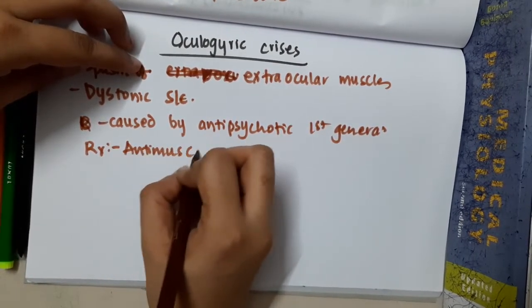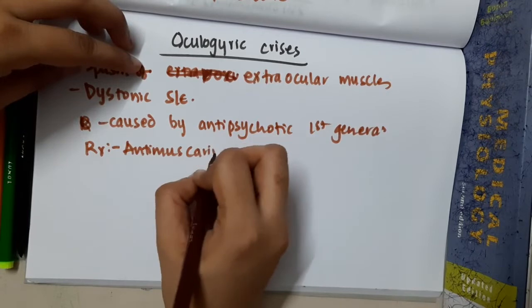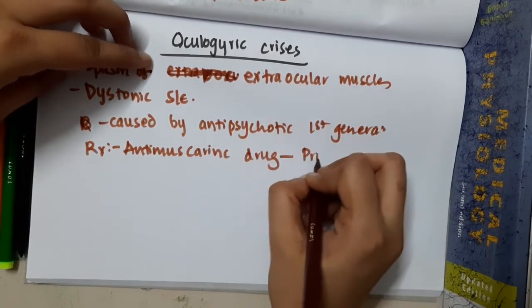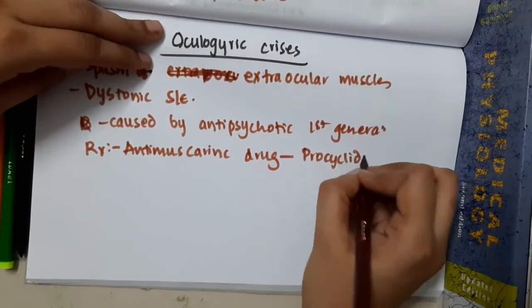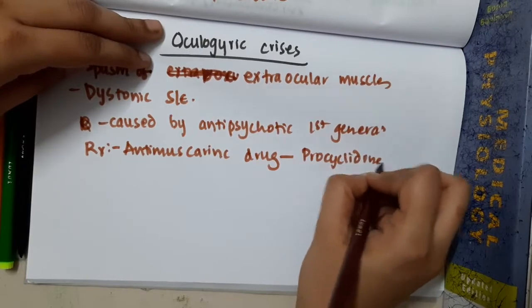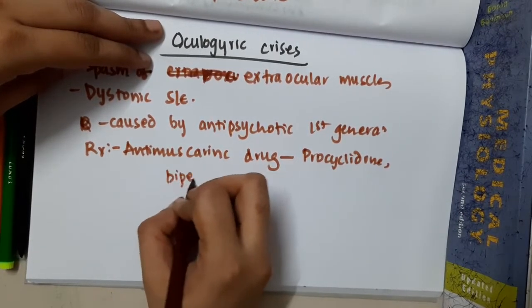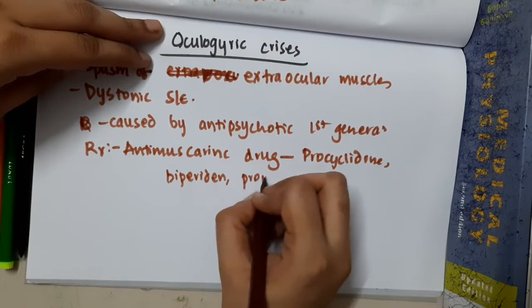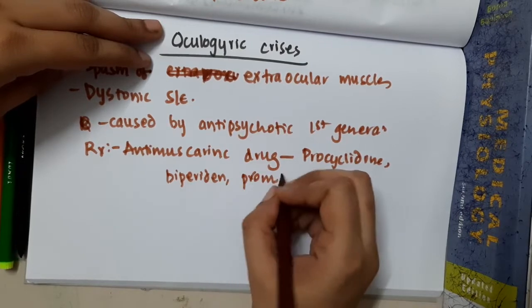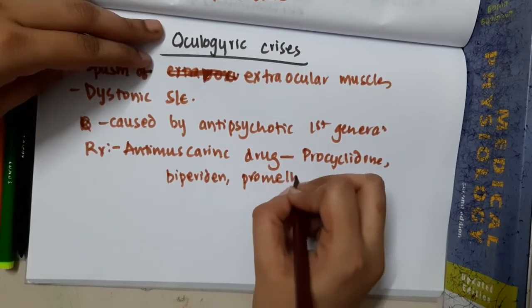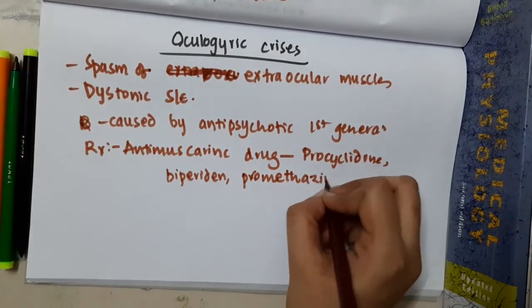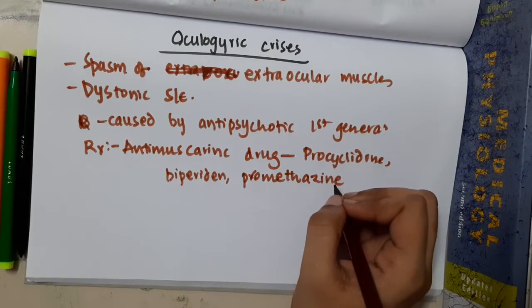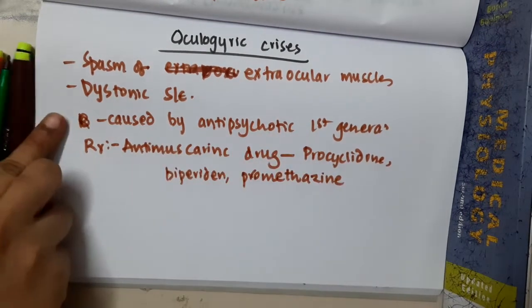The treatment is mainly with anti-muscarinic drugs. Procycline, biperiden, and promethazine are used. Thank you for watching.